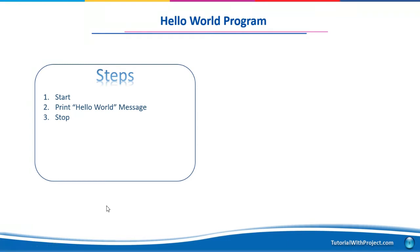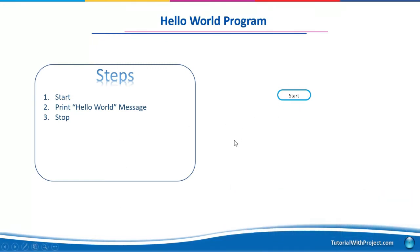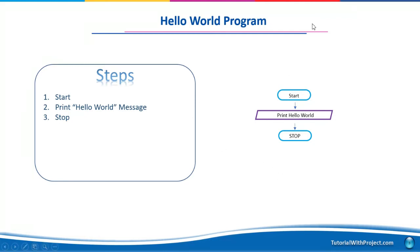Now we are going to represent these steps as a graphical representation — that is a flowchart. A flowchart is the graphical representation of a program. Step 1 is Start, then Print Hello World, and the last step is Stop. After practicing some programs, these steps and graphs will be constructed automatically in your mind — you won't have to do it manually.